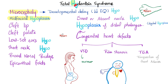What is fetal hydantoin syndrome? Everything follows the 'hypo' theme: skull size is hypo — microcephaly; the face is small — mid-facial hypoplasia, cleft lip, cleft palate; low-set ears; short neck; developmental delay with low IQ; and smaller or absent nails — hypoplasia of not just nails but also digits, especially the distal fingers. This is called distal phalangeal hypoplasia.